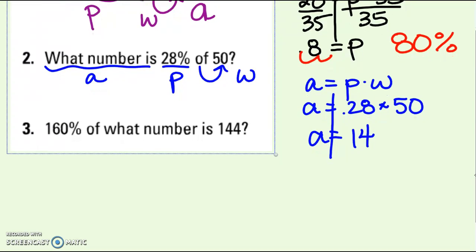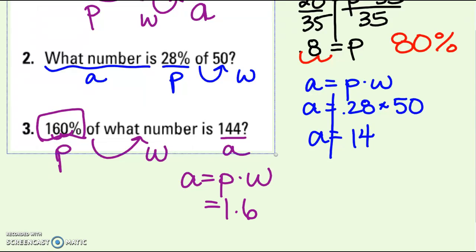Last one. 160% of what number is 144? Well, 160 has got to be the percent. Of what number means I don't know the whole or the total. Is 144, that's got to be my part. So it looks like I'm looking for W. Write out your equation. Now plug things in where they go. Make sure you write your percent as a decimal, so I'm going to move it over two places. I don't know the whole, so that's still W. And 144 is the part.